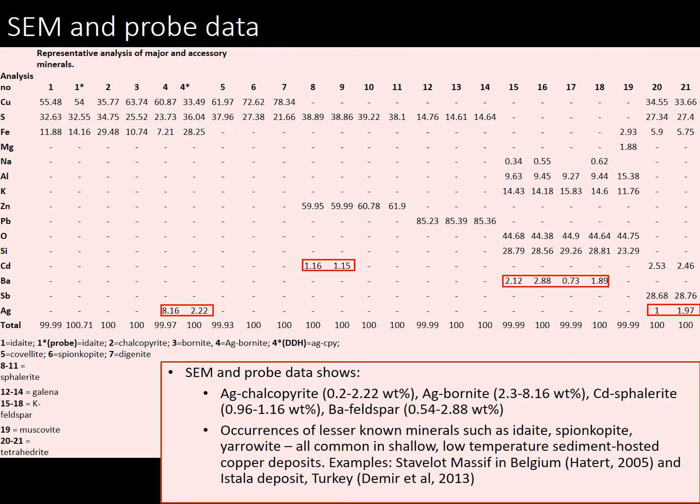SEM and probe data revealed silver-bearing chalcopyrite carrying up to 2% silver, silver-bearing bornite carrying up to 8% silver, cadmium sphalerite with cadmium contents up to 1% weight, and barium-bearing feldspar with barium contents up to 3% weight. The data also showed occurrences of lesser-known minerals such as idaite, spionkopite, and yarrowite, which are all common in shallow, low-temperature sediment-hosted copper deposits, such as the Stavelot Massif in Belgium and the Estela deposit in Turkey.